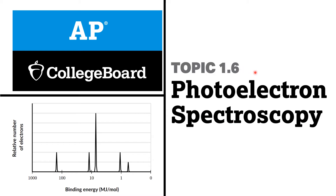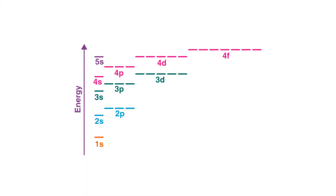Hello everyone, this is topic 1.6, photoelectron spectroscopy, taken from AP Chemistry College Board. In topic 1.5, I talked about how to write the electronic configuration of different atoms or elements. If you want to know more about it, you can watch topic 1.5 from my channel.